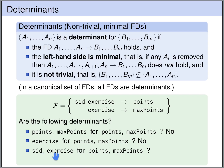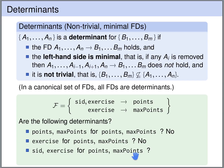Do SID and exercise together form a determinant for {points, max_points}? SID and exercise together uniquely determine the number of points, and exercise determines the maximum number of points — so this is a valid functional dependency. Is it minimal? If we remove SID, the points are no longer uniquely determined. If we remove exercise, the maximum points are no longer uniquely determined. So it is minimal. It is also not trivial, because the right-hand side is not a subset of the left-hand side. So yes, it is a determinant.